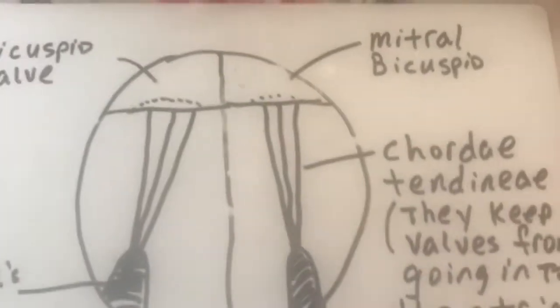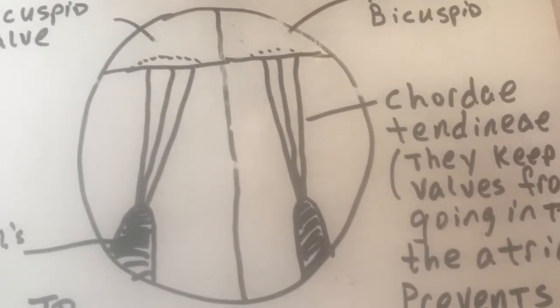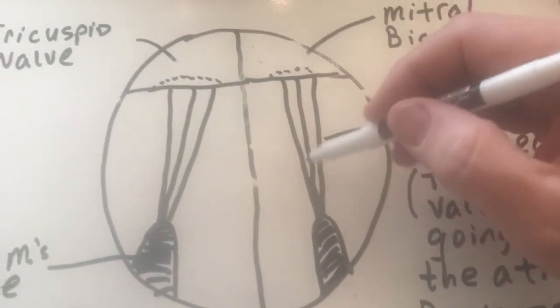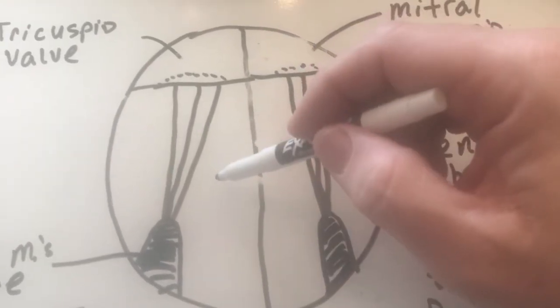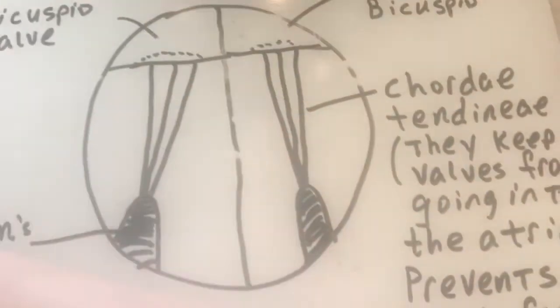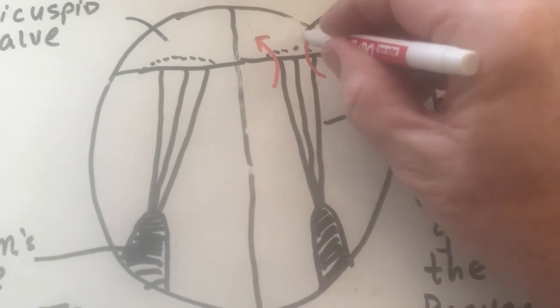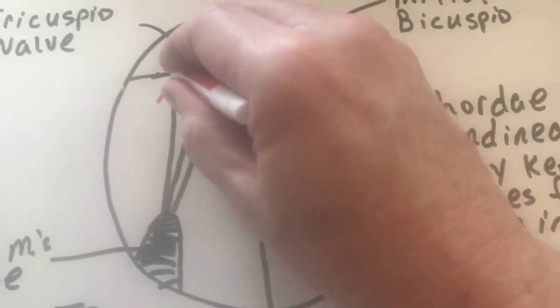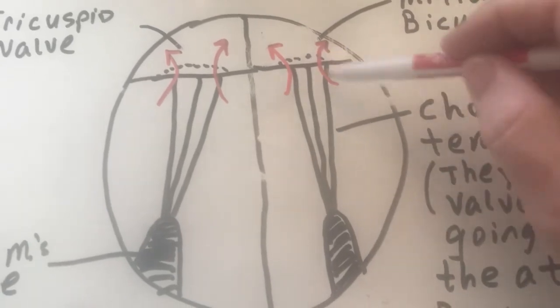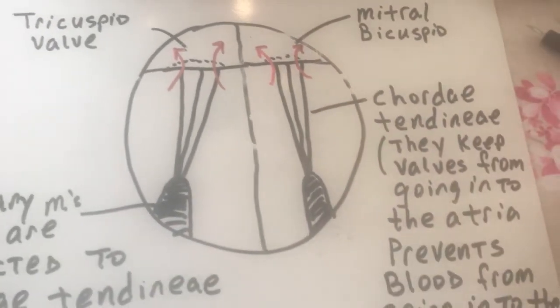Now, like I mentioned, what will happen is if these chordae tendinea become stretched out, or sometimes people are just born with it, the valves will actually go back. So instead of blood going to where they're supposed to go, like out to the body through the aorta, or out to the lungs through the pulmonary artery from the right ventricle, these will open up a little bit, and then blood, let me get my red marker here, blood will actually go up into here on accident. And when it does, it makes a little sound, and that sound's called a heart murmur. Okay, so basically a heart murmur is when your valves don't close properly and blood goes back the wrong way. And they're pretty common, and sometimes they're not, most of the time they're not harmful.